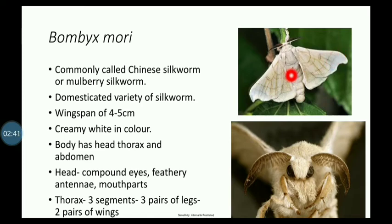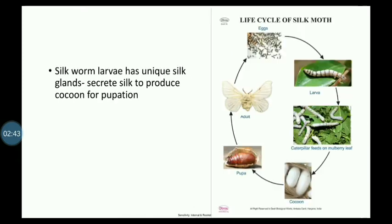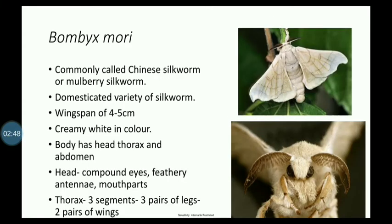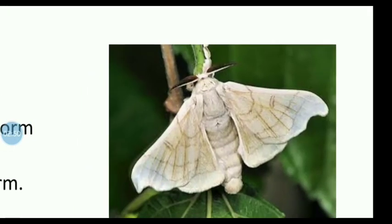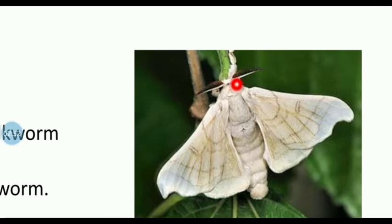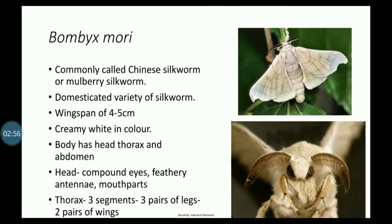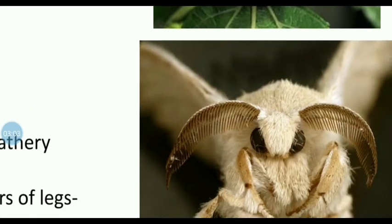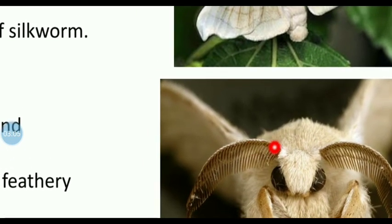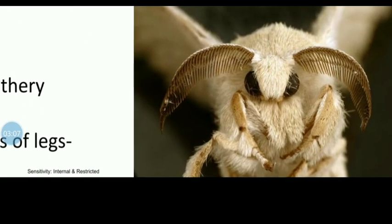The adult moth has a wing span of 4–5 cm and is creamy white in color. It has a head, thorax, and abdomen, with three pairs of walking legs and two pairs of wings. The head has compound eyes, and the antennae are feathery or bipectinate in structure.